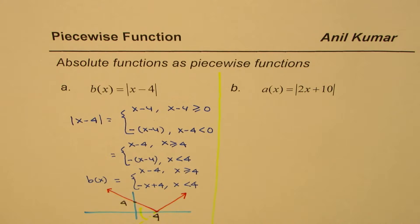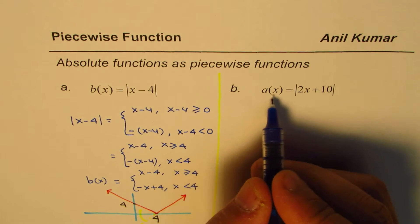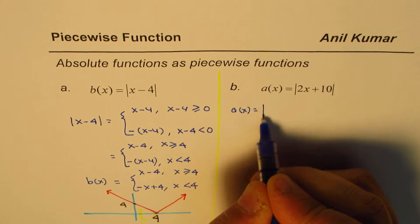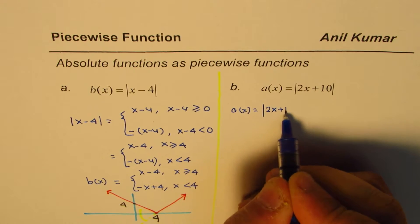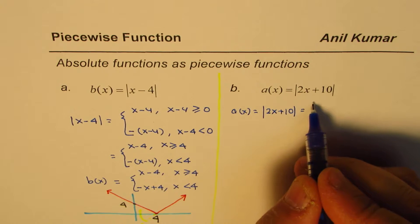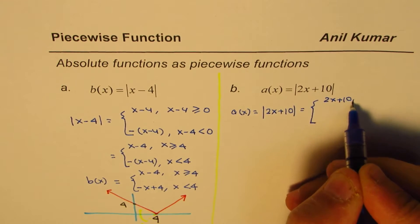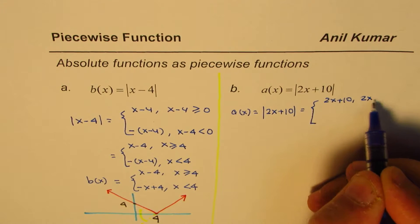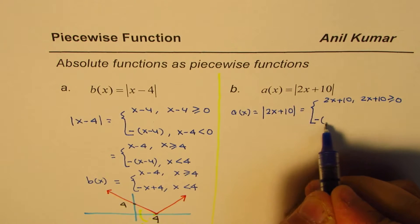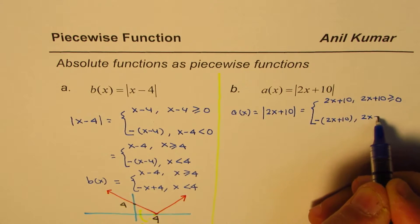You can pause the video and try the second part yourself before looking at my solution. For a(x) = |2x + 10|, we write it as a piecewise function: the two pieces are 2x + 10 if 2x + 10 is greater than or equal to 0, or negative of (2x + 10) if 2x + 10 is less than 0.